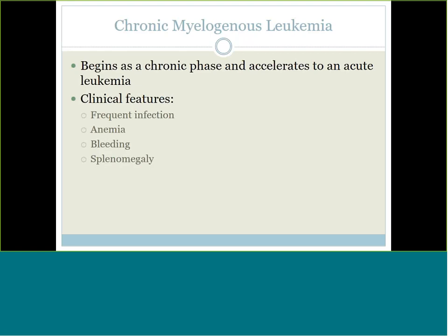CML stands for chronic myelogenous leukemia. In healthcare we love to triple-name things — you may also see it listed as chronic myeloid leukemia or chronic granulocytic leukemia. All three are the same thing: CML. This is a chronic leukemia, but at a certain point in the patient's disease cycle it could turn into an acute leukemia, at which point the prognosis becomes much more severe. The clinical features include frequent susceptibility to infections, anemia, prone to bleeding, and splenomegaly — which you'll actually find in all four of these diseases.